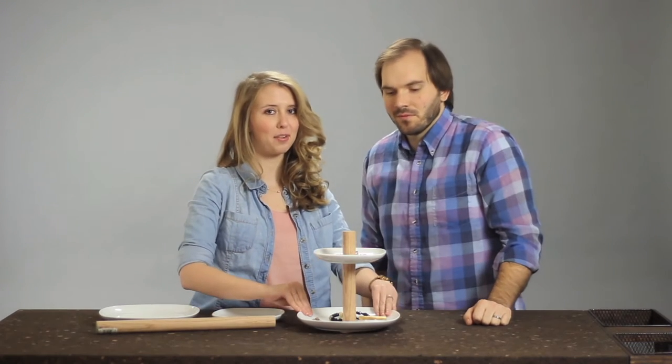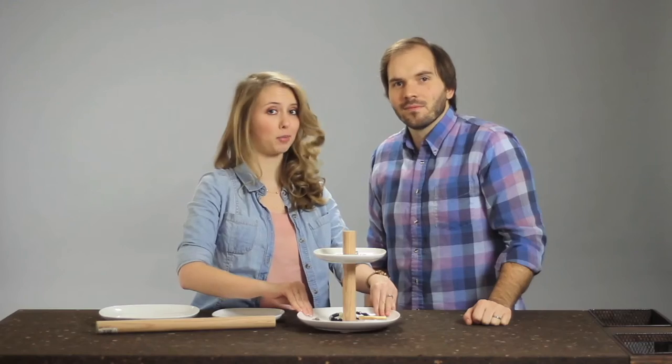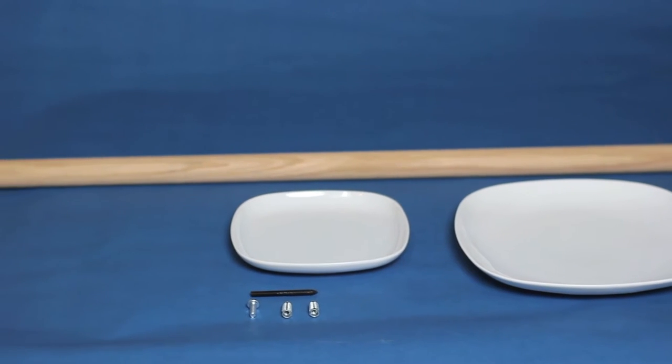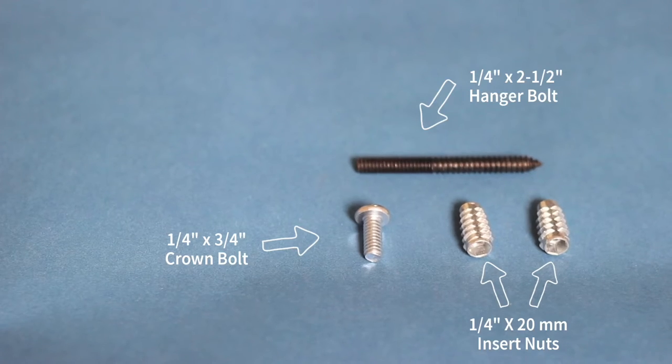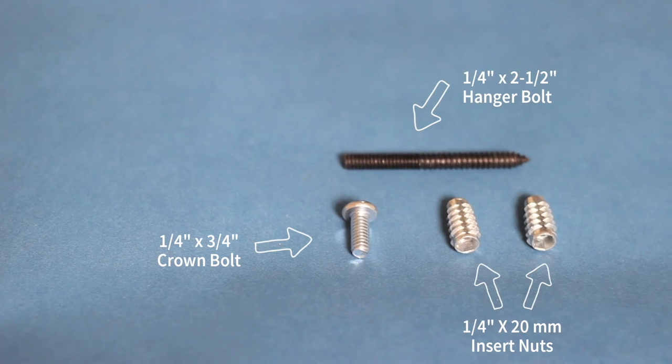So we'll show you how to DIY this jewelry stand that your friends will be convinced that you bought from a store. Along with the two plates and dowel rods, you will need one hanger bolt, two insert nuts, and a crown bolt.